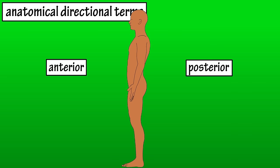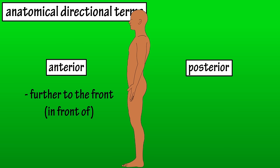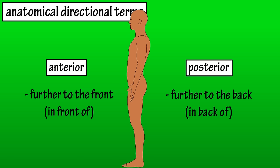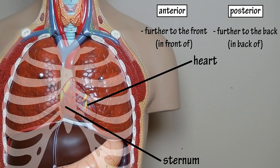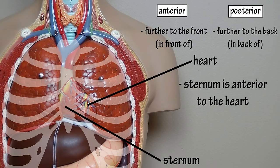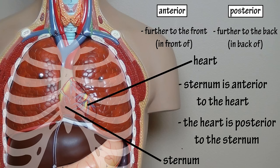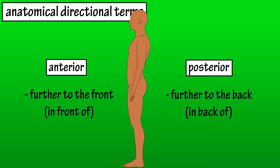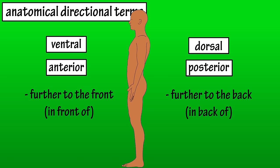Next is anterior and posterior. Anterior means further to the front, or in front of. Posterior means further to the back, or in back of. So we would say the sternum is anterior to the heart, and the heart is posterior to the sternum. Sometimes the terms ventral and dorsal are used in place of anterior and posterior, where ventral means anterior and dorsal means posterior.